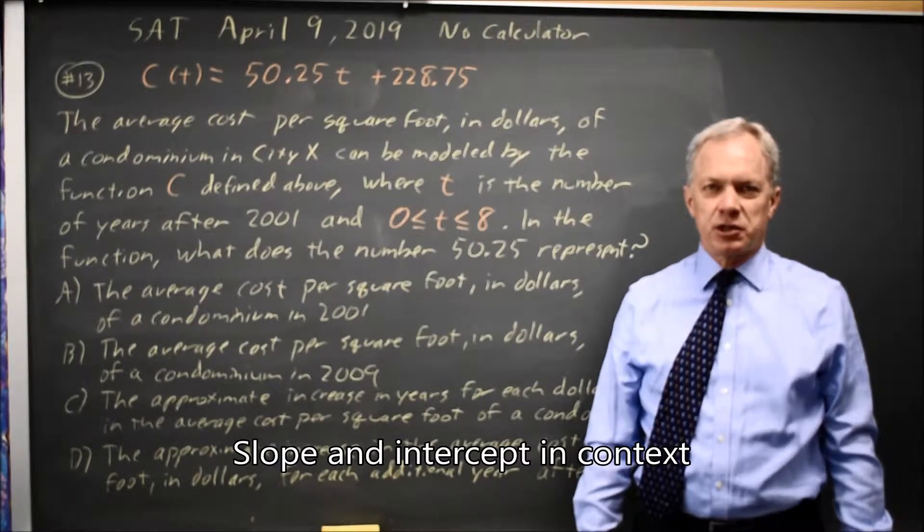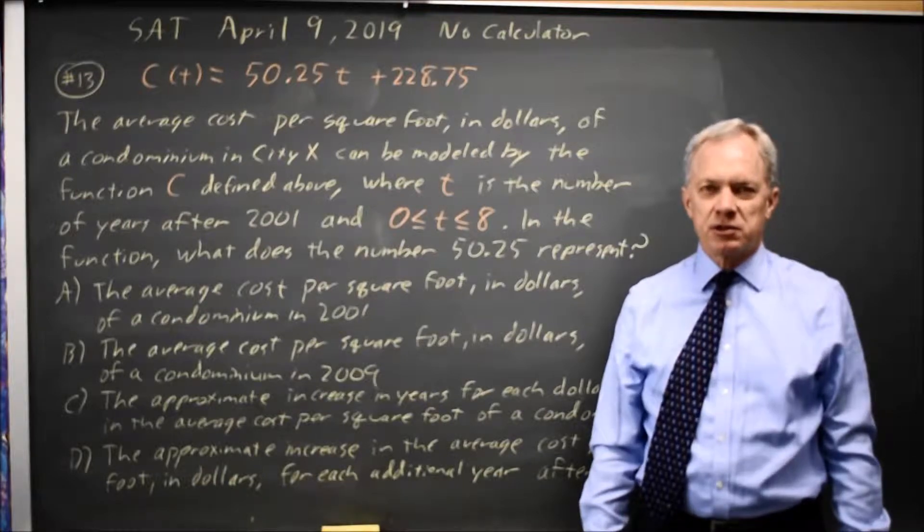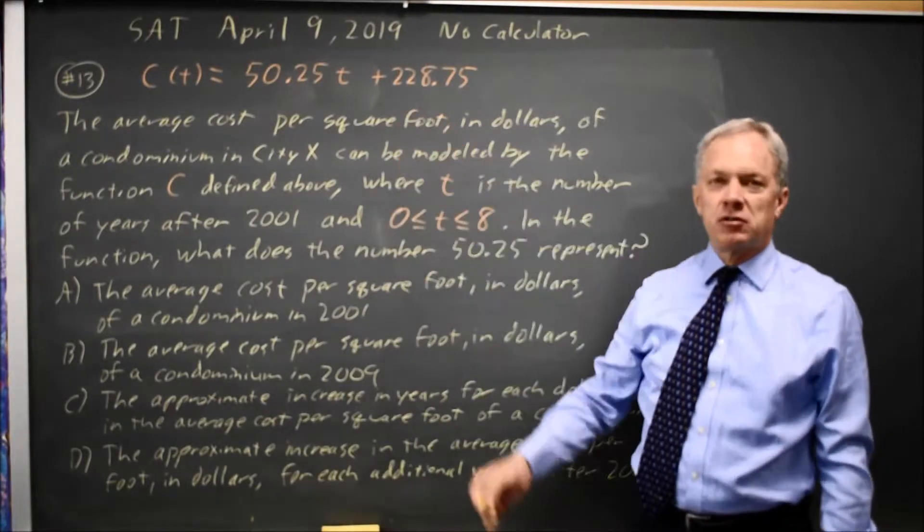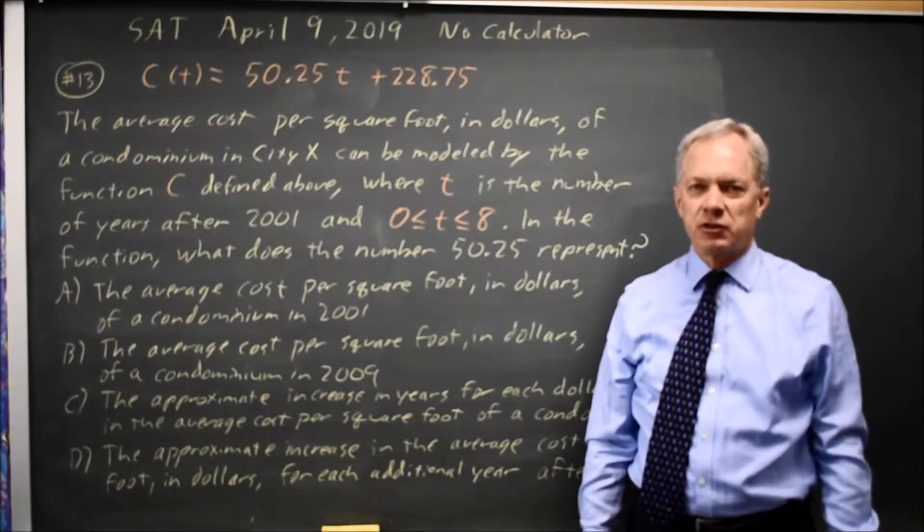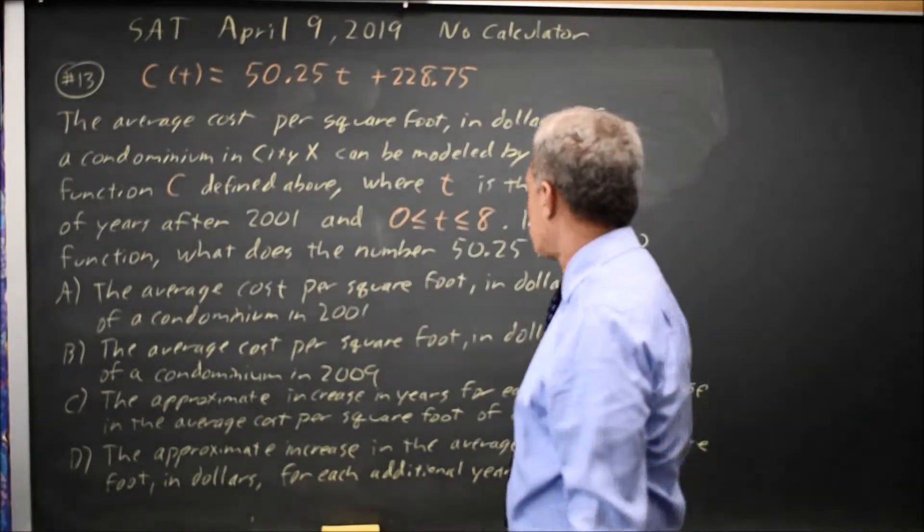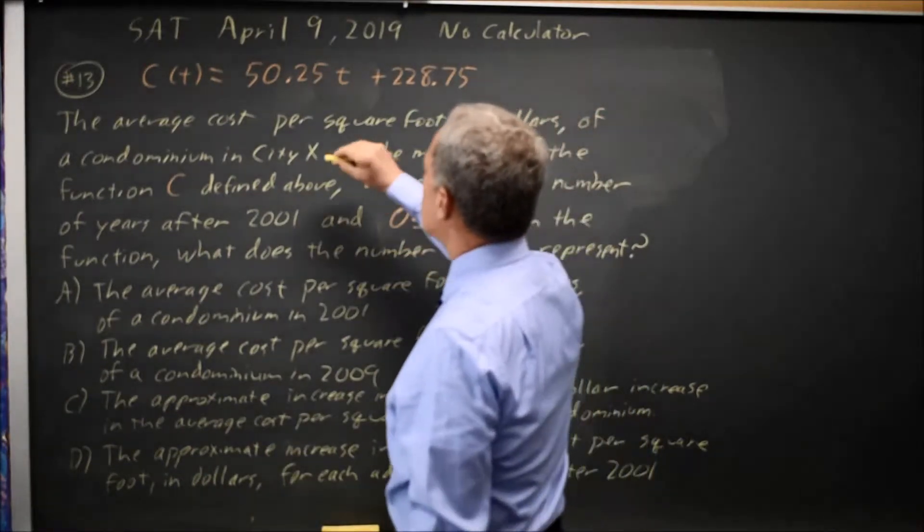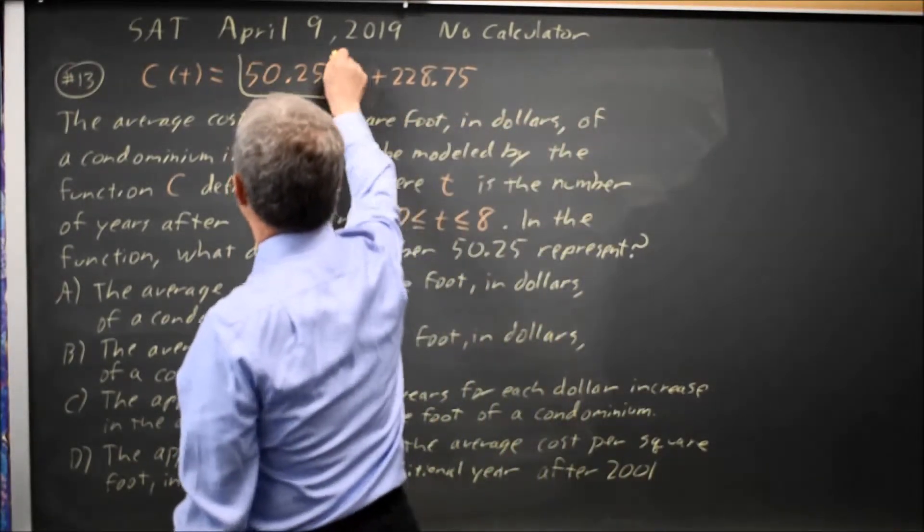This is non-calculator question number 13 from the April 2019 SAT. The College Board gives us a linear equation for the cost per square foot of a condominium two years after 2001 and asks us to interpret the 50.25. That's this coefficient.